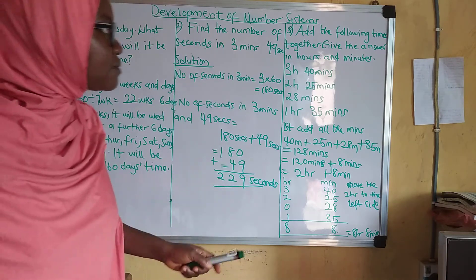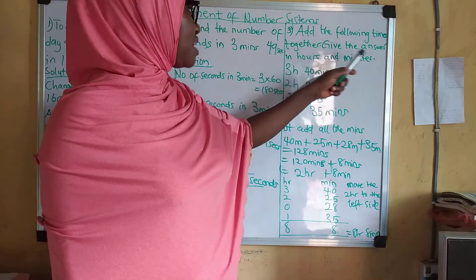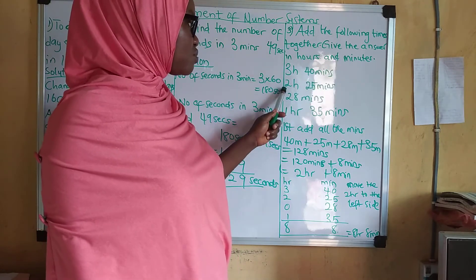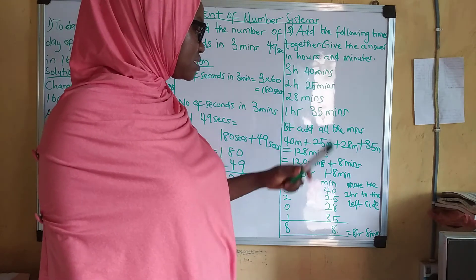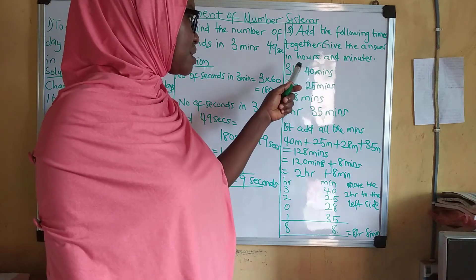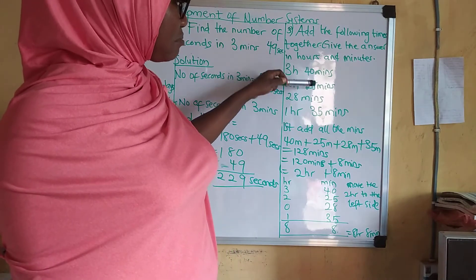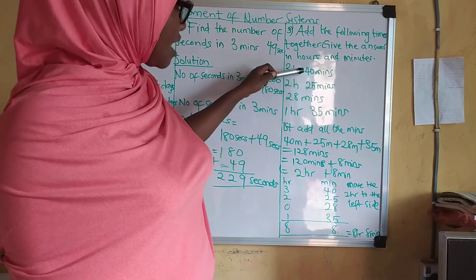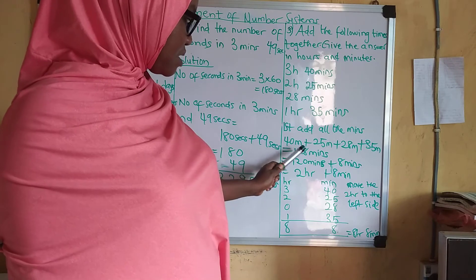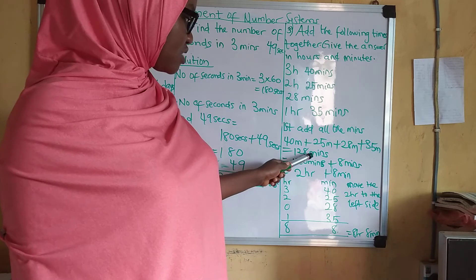Now, let's take one more example for the last one. Example number 3: Add the following times together and give the answer in hours and minutes. We have 3 hours 40 minutes, 2 hours 25 minutes, 28 minutes, and 1 hour 35 minutes. The first thing you want to do is add all the minutes together: 40 plus 25 plus 28 plus 35 minutes, which gives us 128 minutes.